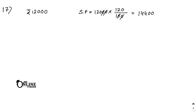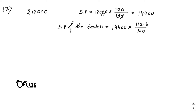The company's SP becomes the cost price for the dealer. Now find the SP of the dealer: 14,400 into 112.5 by 100 equals 16,200. So 16,200 is your answer for sum number 17.